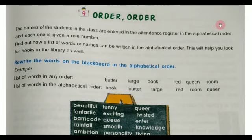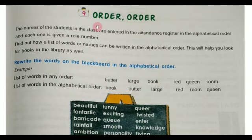Welcome to the class of Thunder 5. Today we are going to discuss GK chapter number 9 and 10. Let's start. Chapter number 9 is 'Order.' Order means arrange in some order — numerical order, alphabetical order.